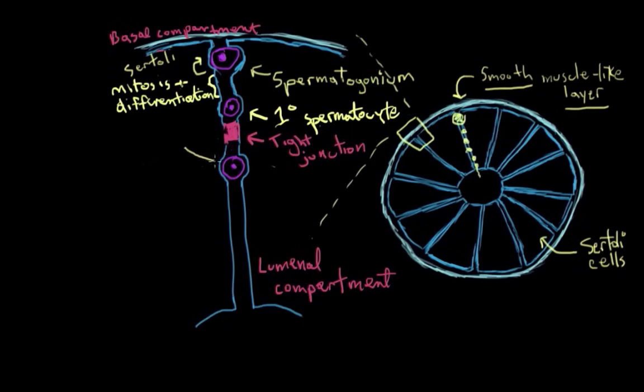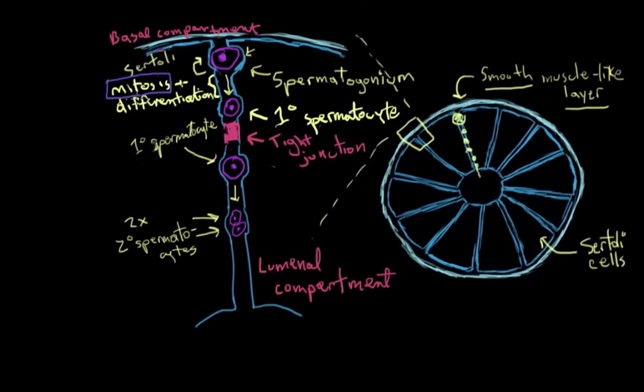Back to our primary spermatocyte. It's passed through the tight junction now, and it hasn't really changed, except enlarging a little bit by gaining more cytoplasm. Now it divides and differentiates into two secondary spermatocytes. But, there's actually a pretty big difference between the division that the spermatogonium did to produce the primary spermatocyte and the new spermatogonium. That division was by mitosis. And this division, where the primary spermatocyte divides to create two secondary spermatocytes, this is called meiosis.